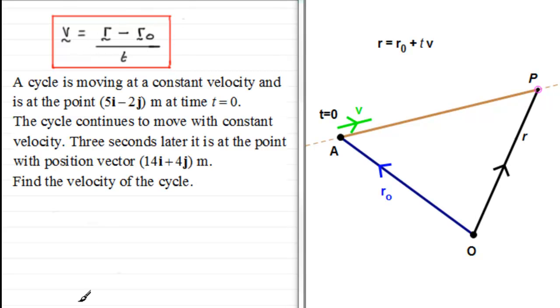So suppose we have a cycle and it's moving at a constant velocity and is at the point 5i minus 2j meters at time t equals zero. The cycle continues to move with constant velocity. Three seconds later, it is at the point with position vector 14i plus 4j meters. And what we've got to do is find the velocity of the cycle.